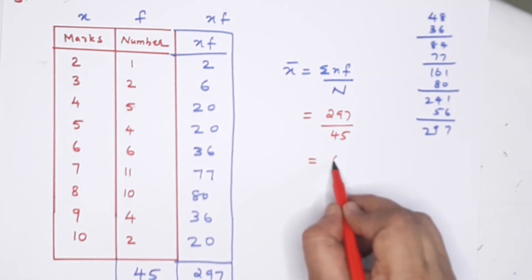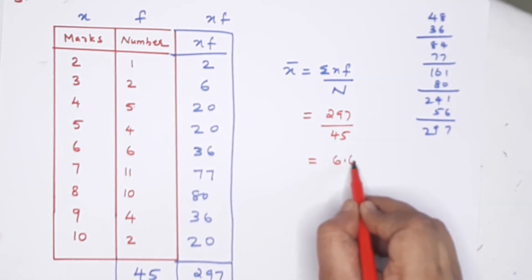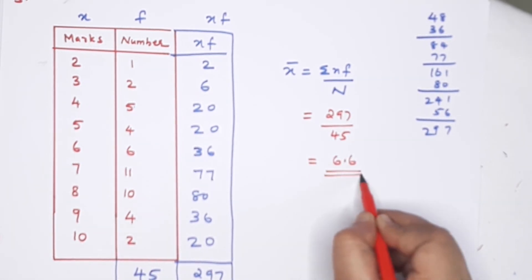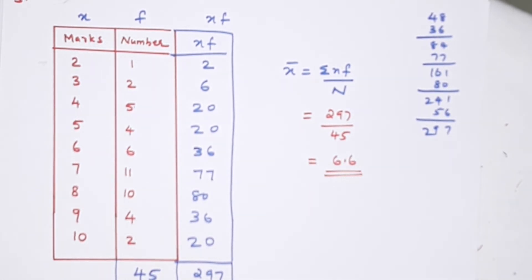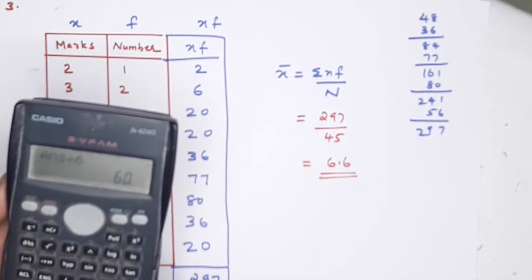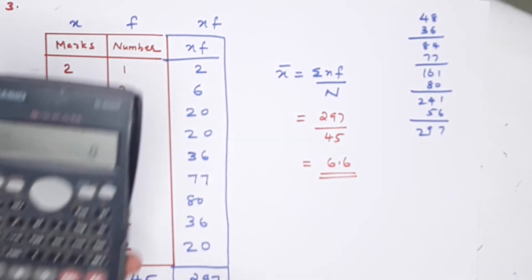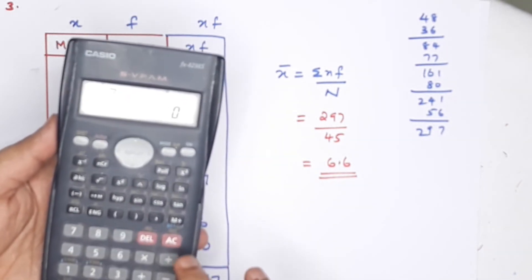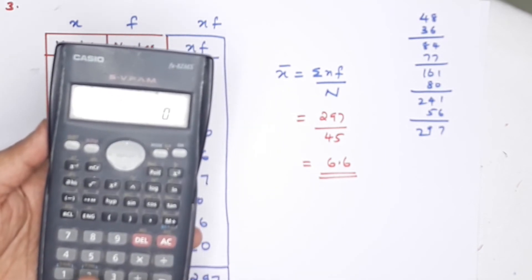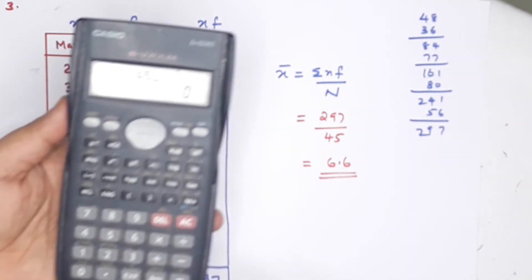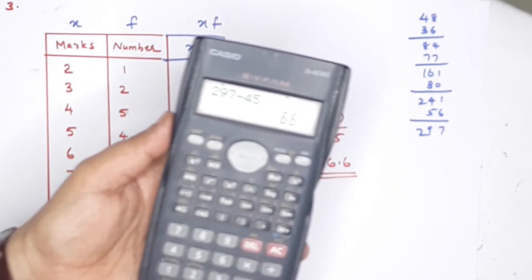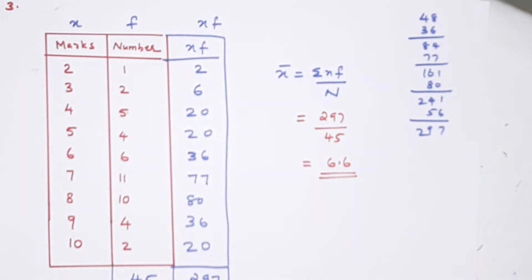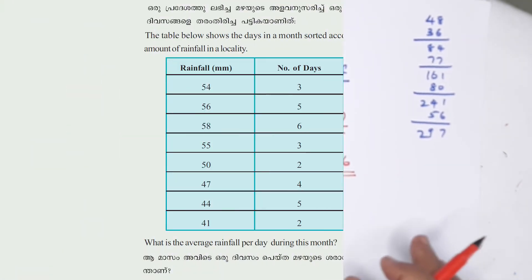Doing the division: 297 divided by 45 equals 6.6. The answer is 6.6.